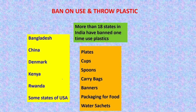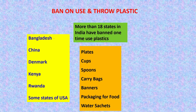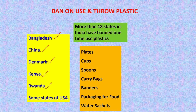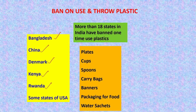Many cities, states, and countries have found a need to ban the use of use-and-throw plastics. Countries such as Bangladesh, China, Denmark, Kenya, Rwanda, and many states in the USA have already banned use-and-throw plastics. This list illustrates that both developed and developing countries across the world are finding the need to ban this type of plastic.